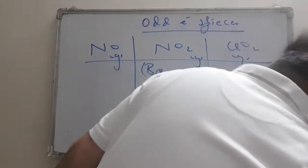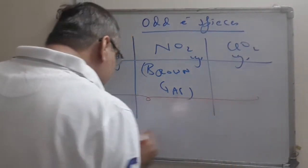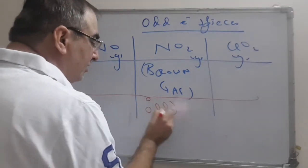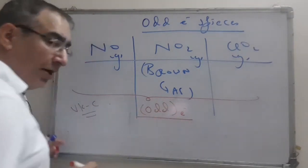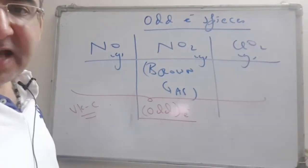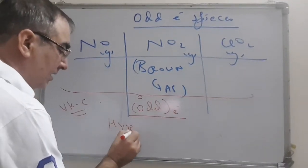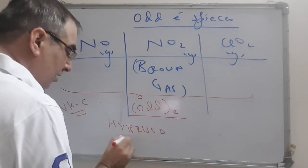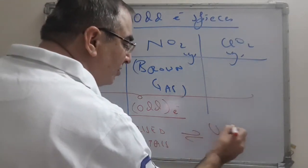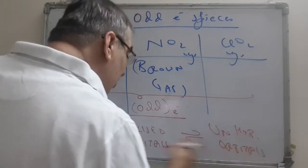Now the problem is when you want to define the hybridization of all these forms, the concept arises which I call the VK concept. The odd electron is present in the valence shell, and what is happening is that the odd electron which is left as it is in the valence shell will move from hybridized orbitals. It actually randomizes from hybridized orbitals to unhybridized orbitals and then comes back.